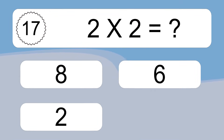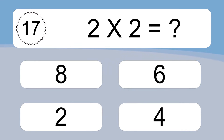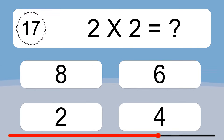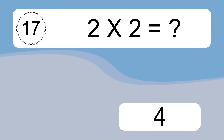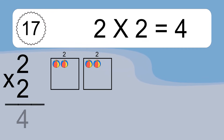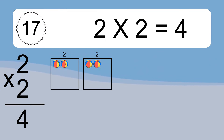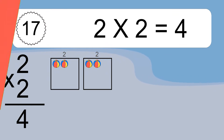2 times 2 equals what? 2 times 2 equals 4. We have 2 boxes, and each box has 2 colorful balls inside. If you count all the balls in all the boxes together, you will have 2 times 2 balls. This equals 4 balls.